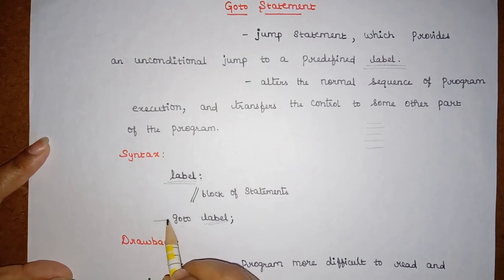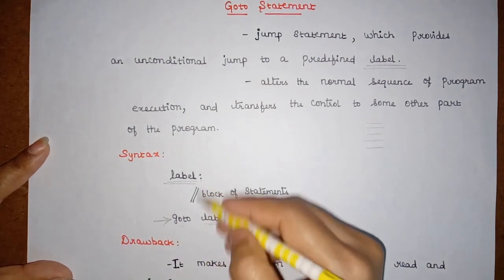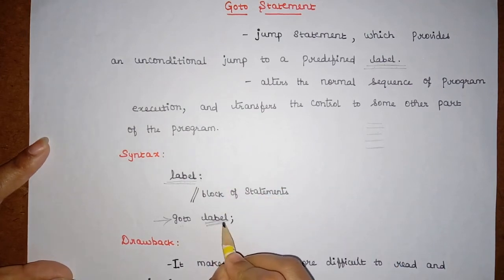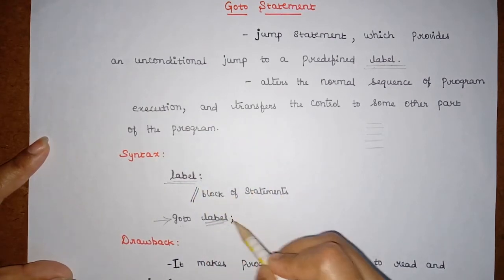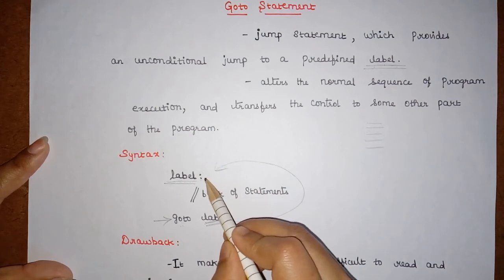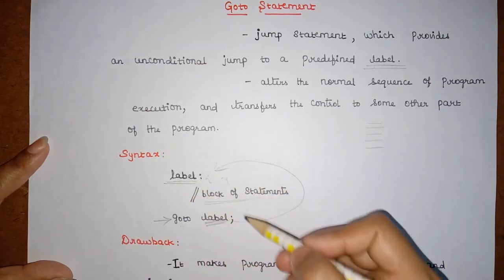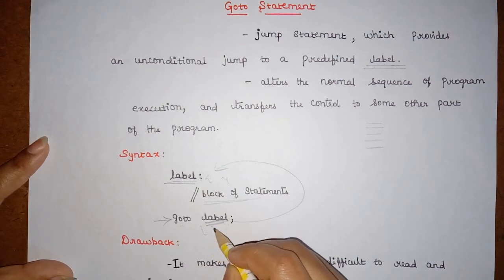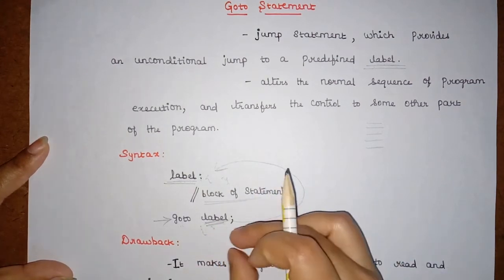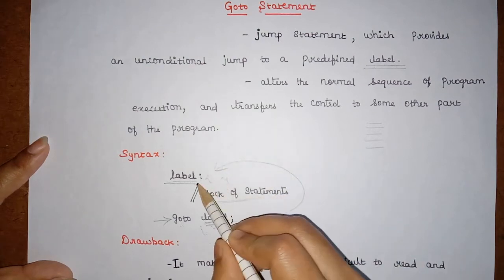After the label block, we have the goto statement — 'goto label'. When control reaches this statement, the compiler searches for the label in the program. Wherever that label is found, control directly moves to it and executes the set of statements present inside the label. Even though there are other statements after 'goto label', those statements will be skipped. Instead of executing them, control moves directly to the label.